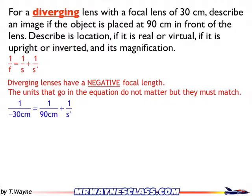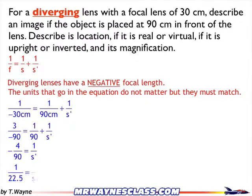So I get 1 over negative 30, because it's a diverging lens — that fact alone gives me the negative sign. That equals 1 over 90 plus 1 over s prime. After finding the lowest common denominator and subtracting 1 over 90 from both sides, then doing a bit more math and reducing, I flip to get the final answer: s prime equals negative 22.5 centimeters.